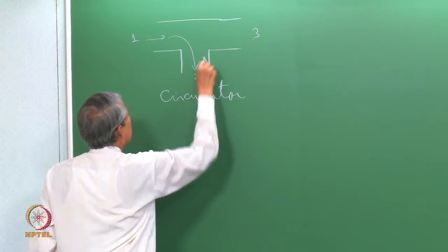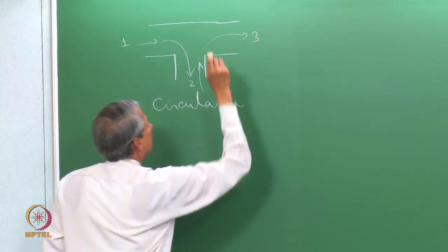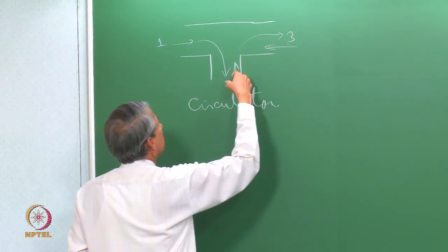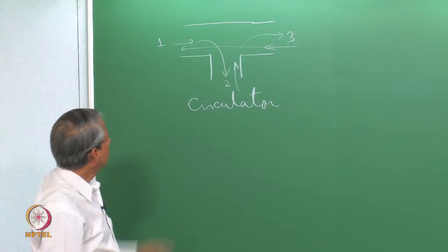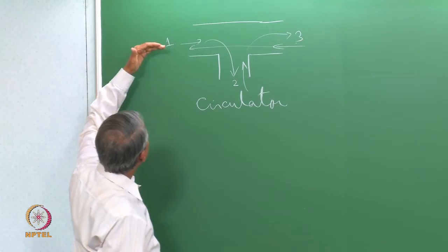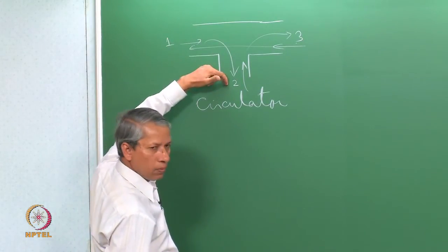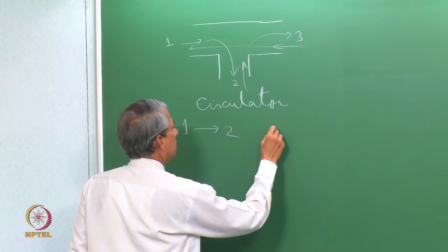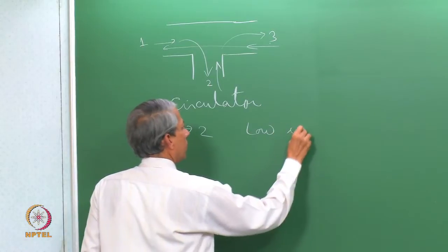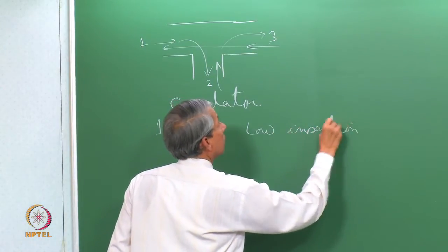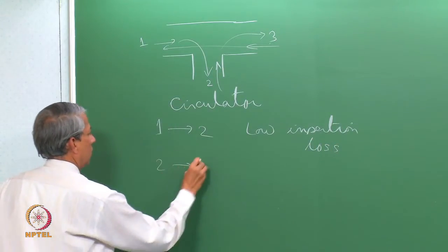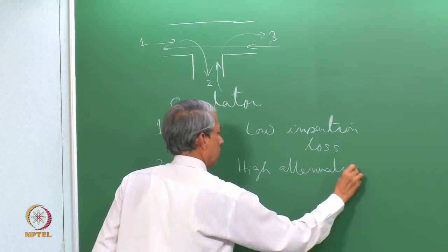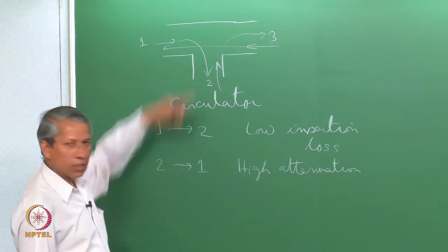Similarly, if the microwave power enters at port number 2, then it will only appear at port 3 as an output. Similarly, if microwave power enters at port number 3, it can only come out at port 1. So this is the non-reciprocating device — the property for radiation to go from port 1 to 2 is not the same as when it enters from 2 to 1. Going from 1 to 2 gives low insertion loss, but 2 to 1 gives high attenuation.